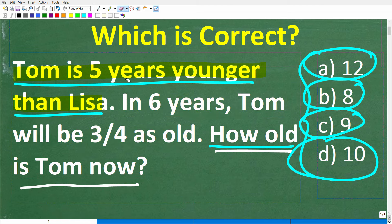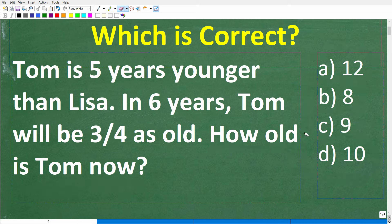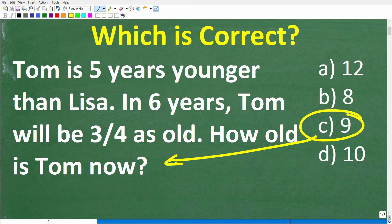This problem could be not too difficult the way it's set up. You could use these multiple-choice answers to figure out the correct solution by trial and error, because one of these is the correct answer. If Tom is nine years old right now, and Tom is five years younger than Lisa, then nine plus five, which is 14, is how old Lisa is right now. You can kind of reverse-engineer the solution just by trial and error, and if you approached the problem that way, that is fantastic.